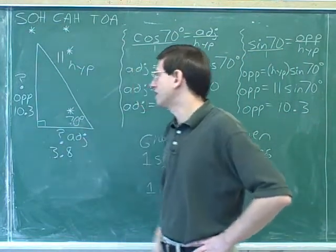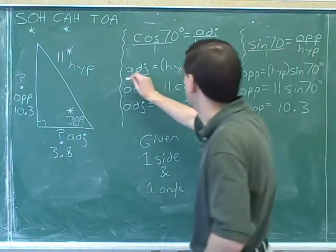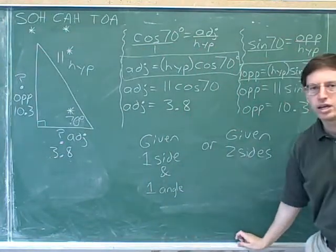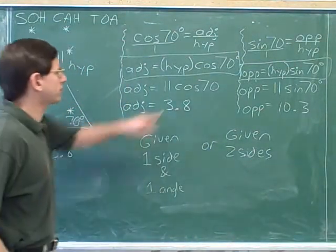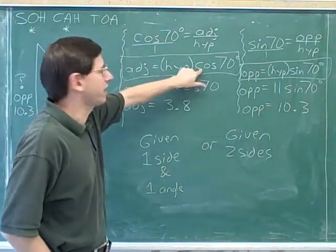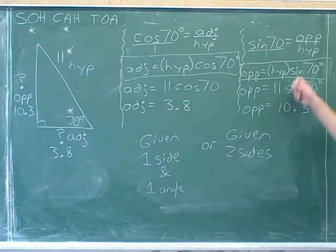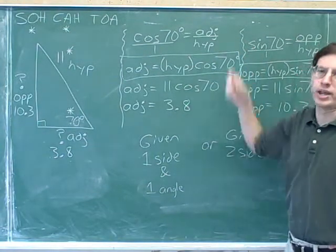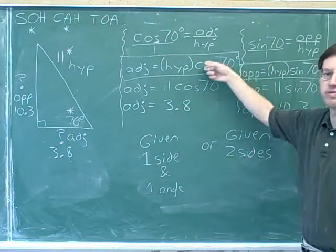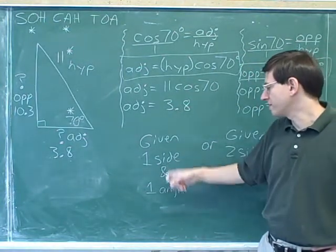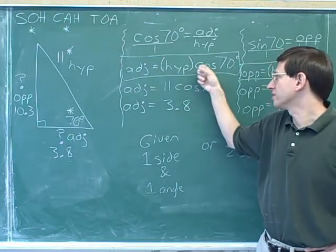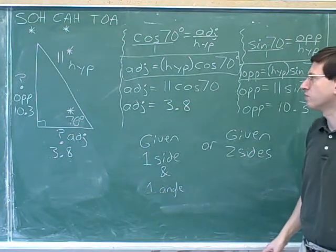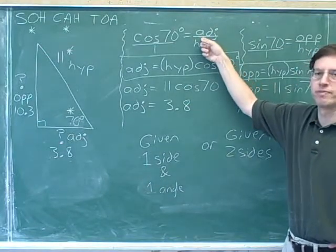Almost always in physics you'll be given the hypotenuse and an angle. If you're given the hypotenuse and an angle, you can use the cosine to find the adjacent side — it's just the hypotenuse times the cosine. And you can use the sine to find the opposite side — it's just the hypotenuse times the sine of the angle. Eventually you'll probably get comfortable going straight to these types of equations: the adjacent side is the hypotenuse times the cosine of the angle, and the opposite side is the hypotenuse times the sine of the angle.